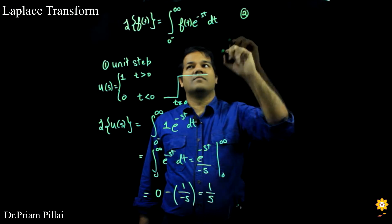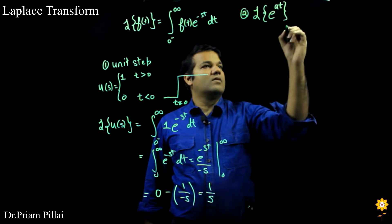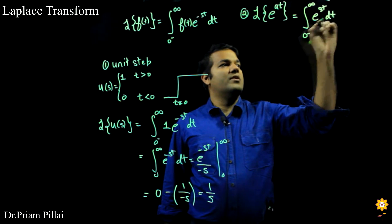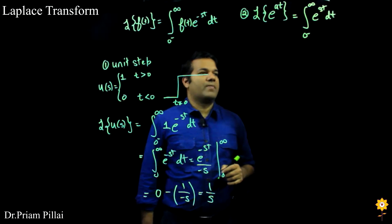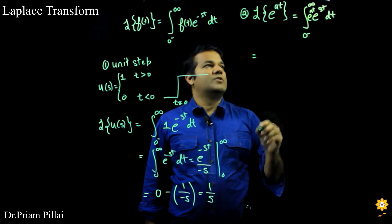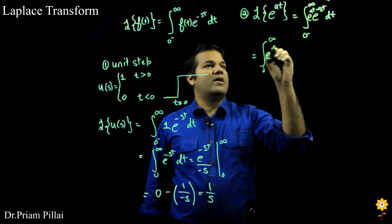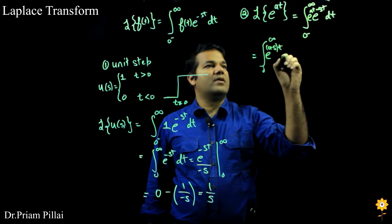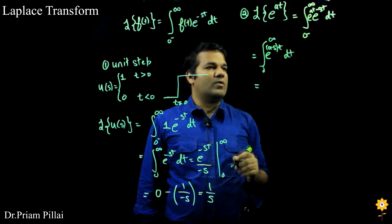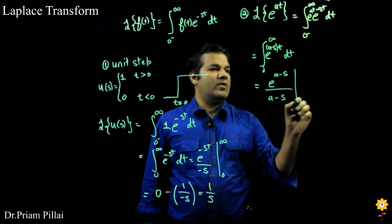Let's take another example. Consider the Laplace transform of an exponential e to the at, given by the integral from 0 to infinity of e to the at times e to the minus st dt. Combining those exponents, we get the integral from 0 to infinity of e to the a minus s times t dt, which equals e to the a minus s times t over a minus s, evaluated from 0 minus to infinity.